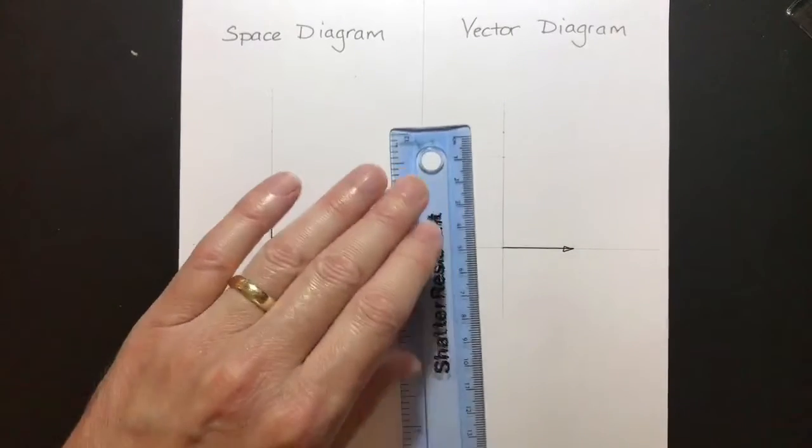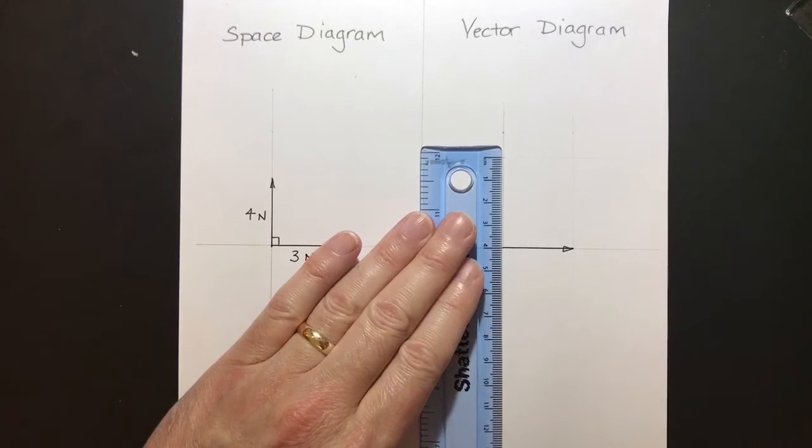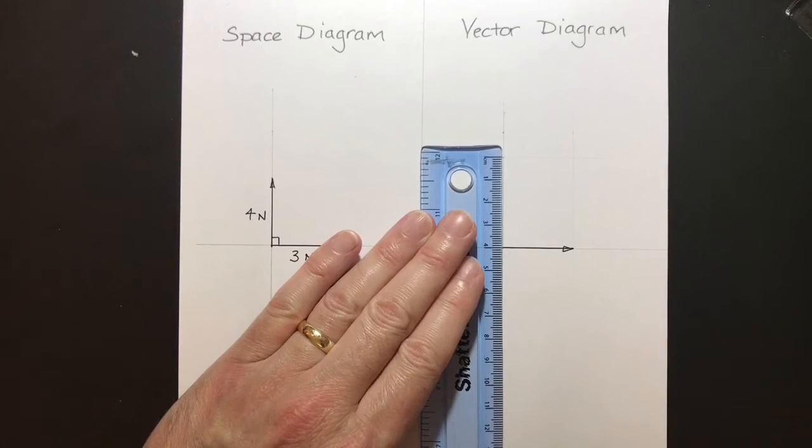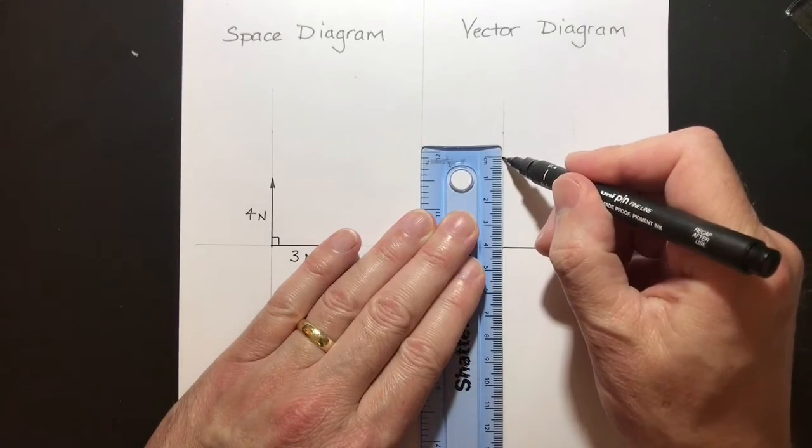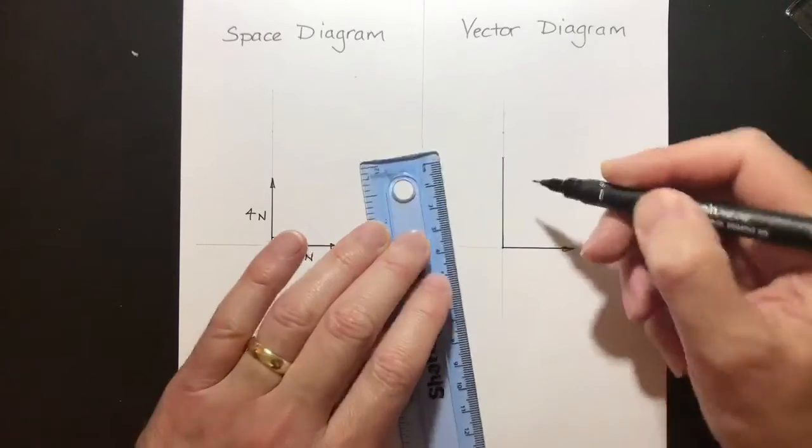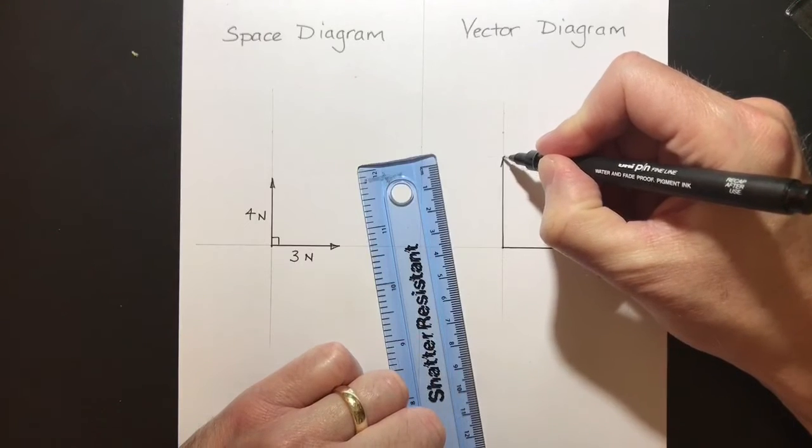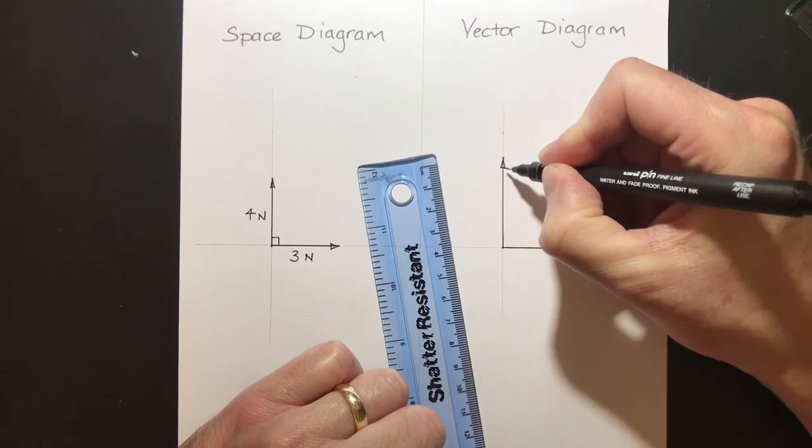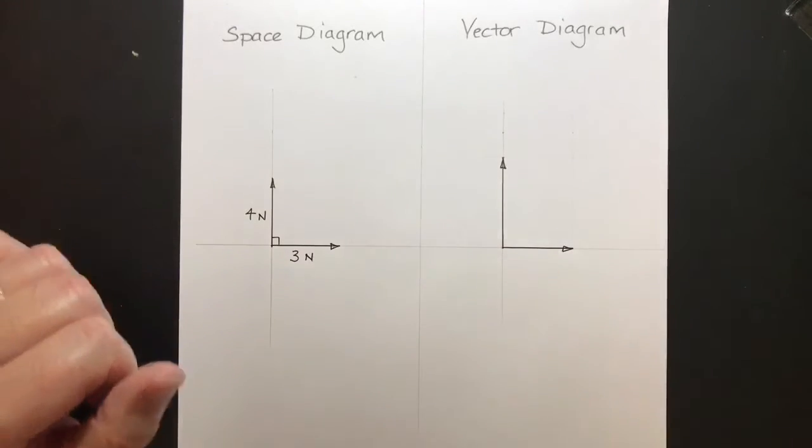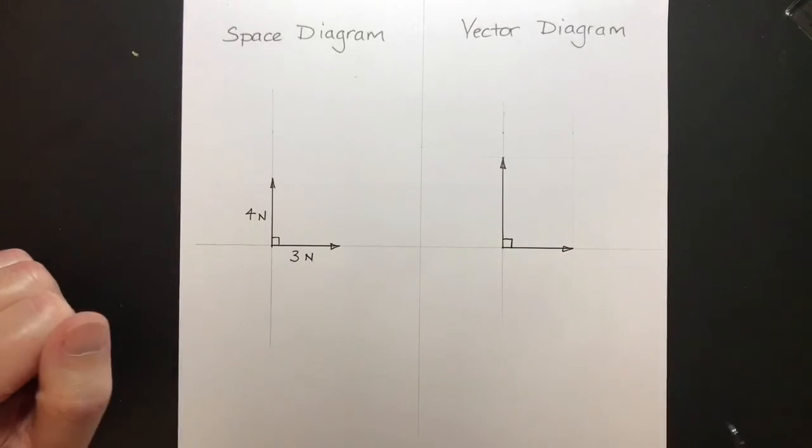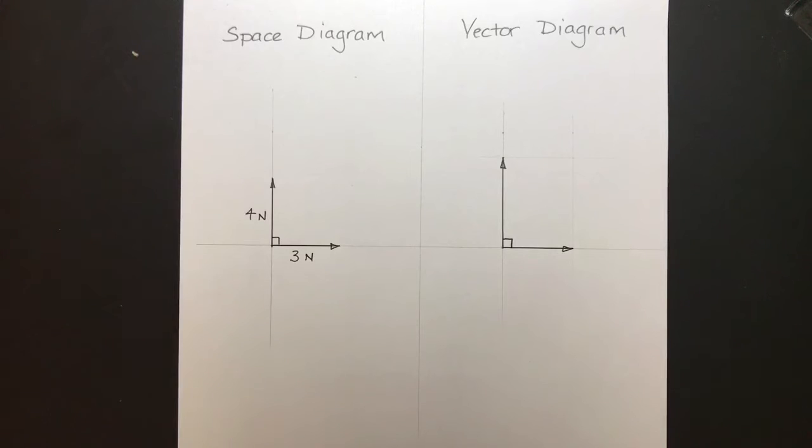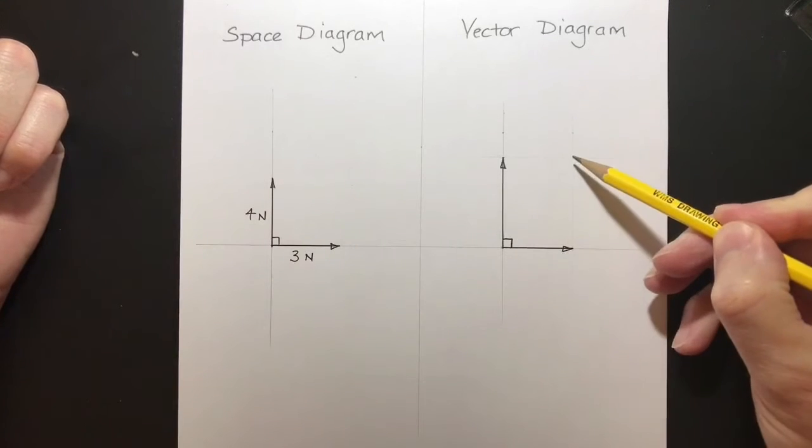And then I'm going to draw this here to show that it's at 90 degrees. Now, next thing to do is to draw a parallel line. This is how we find our resultant.